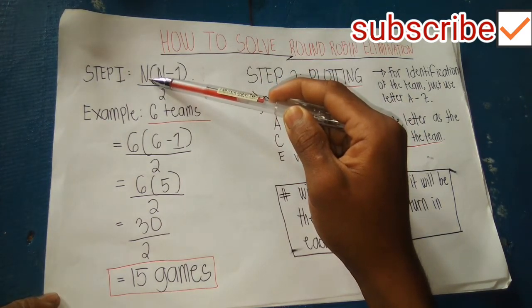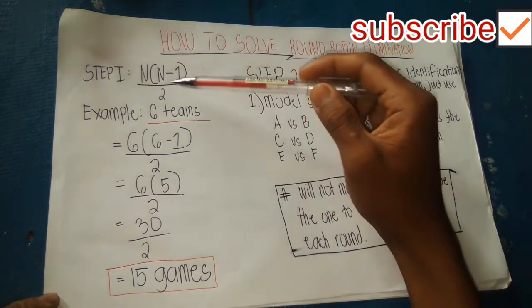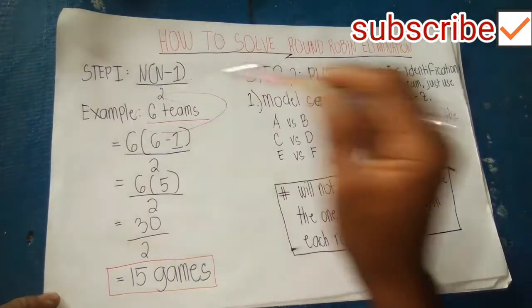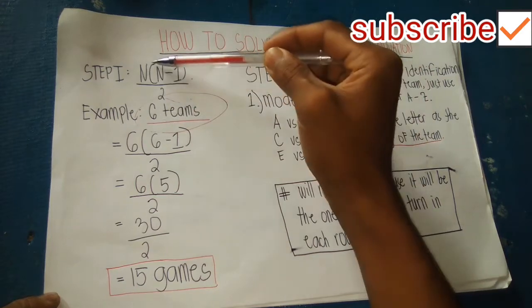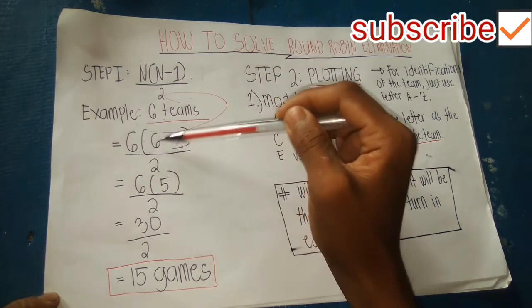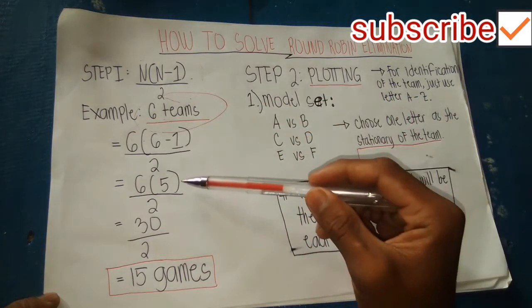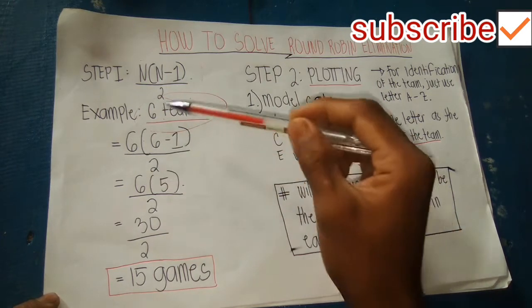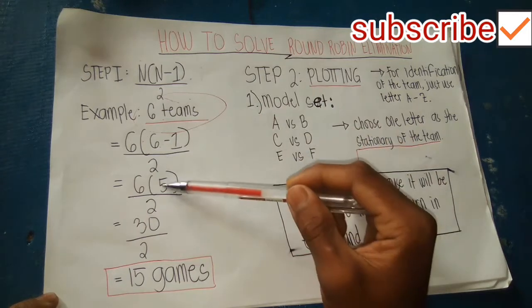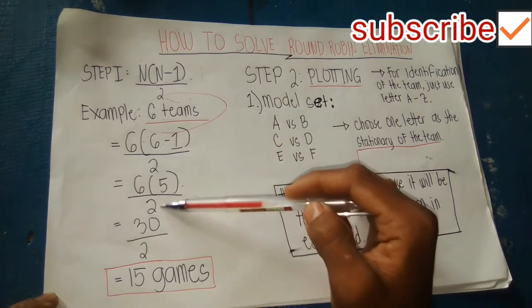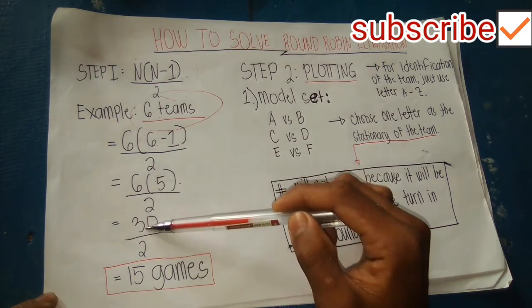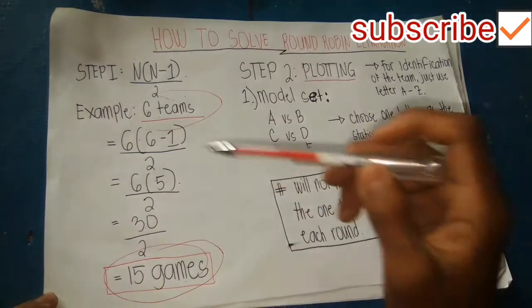Here we have an example — say we have six teams, so n is equal to 6. So: 6 times (6 minus 1) divided by 2. Following PEMDAS, we first solve inside the parentheses: 6 minus 1 is 5. Then 6 times 5 equals 30, and 30 divided by 2 equals 15 games. So with 6 teams there will be 15 games.